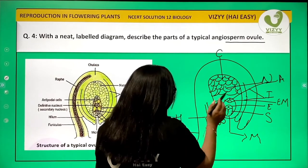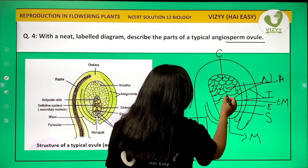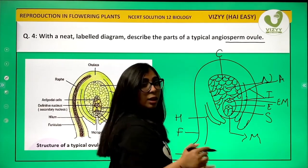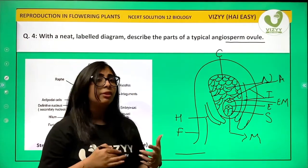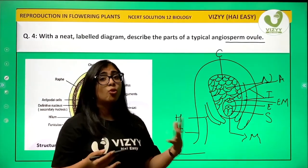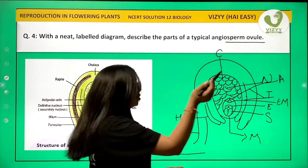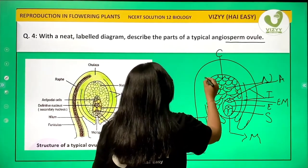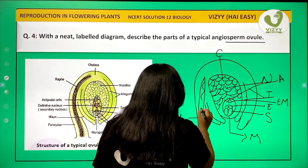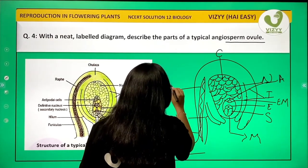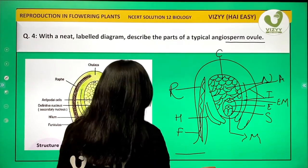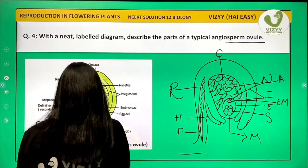Students, remember that when you are drawing a diagram it should be scientifically correct. You do not need to make a very refined diagram — don't waste much time on the drawing itself, but take your time to label it correctly. An extension of the funicle is known as raphe, shown here on the diagram.